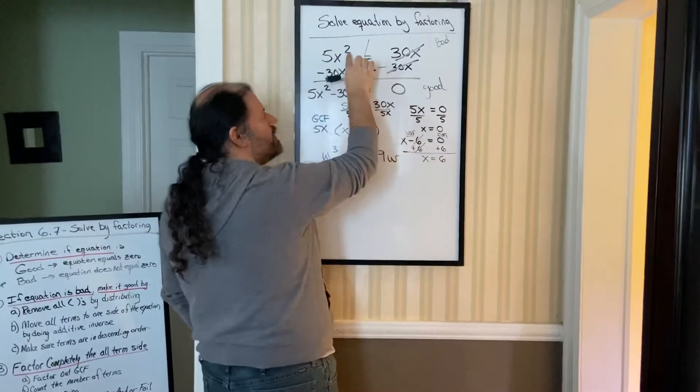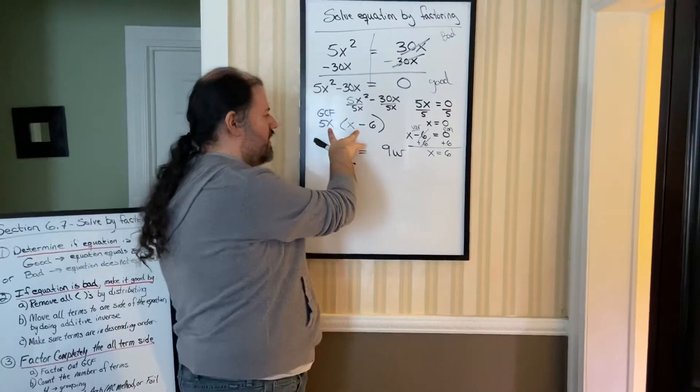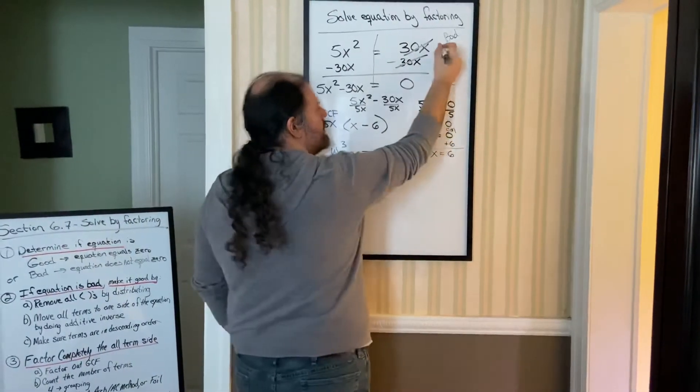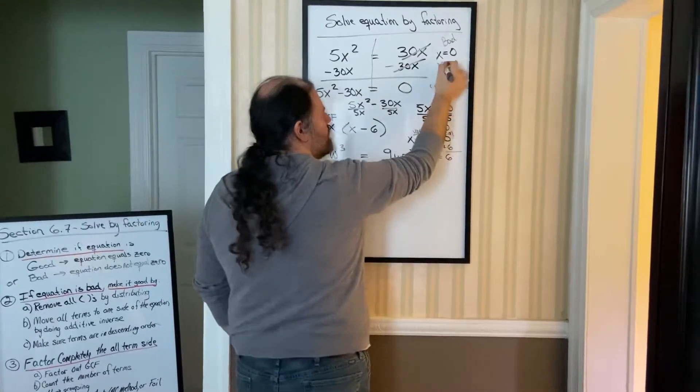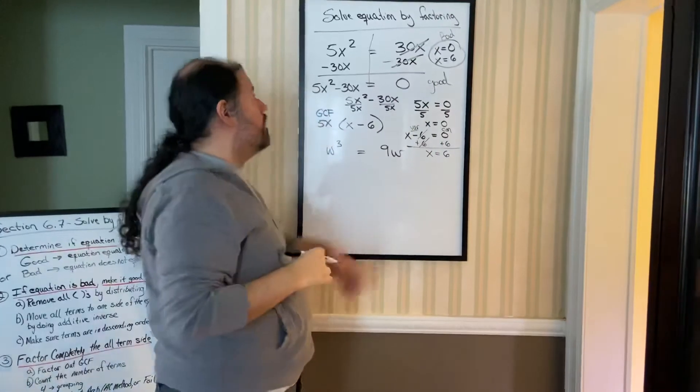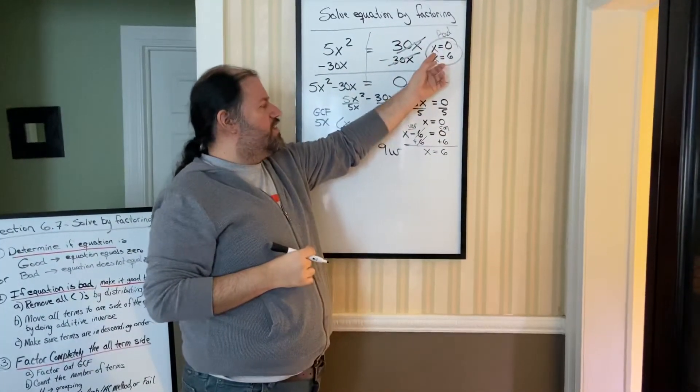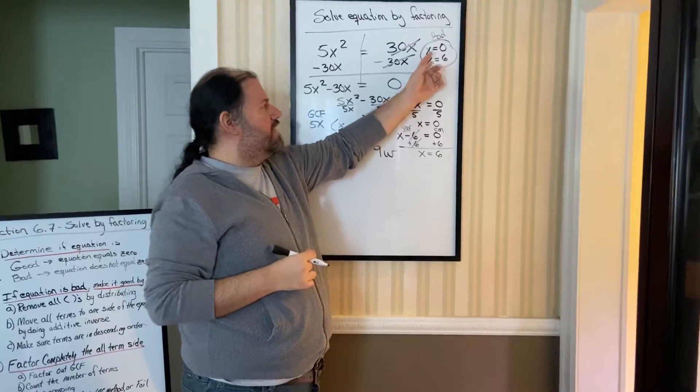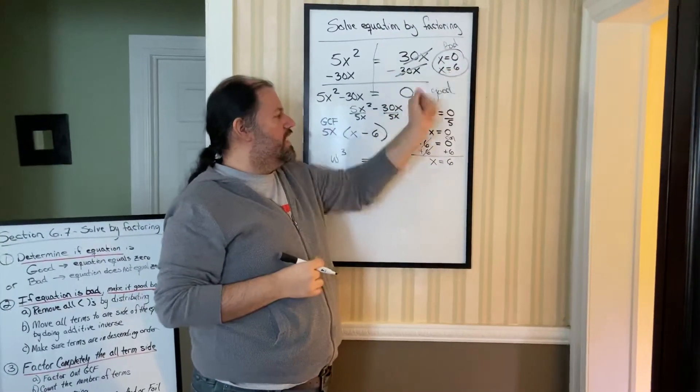Remember, because our original problem had a square, I don't want to see this as my answer. I want to see x equals 0 and x equals 6. That's my answer. When you do solving equations by factoring, your answers are not going to be parentheses. They're going to be letter equals whatever number. x equals 0 in our case and x equals 6.